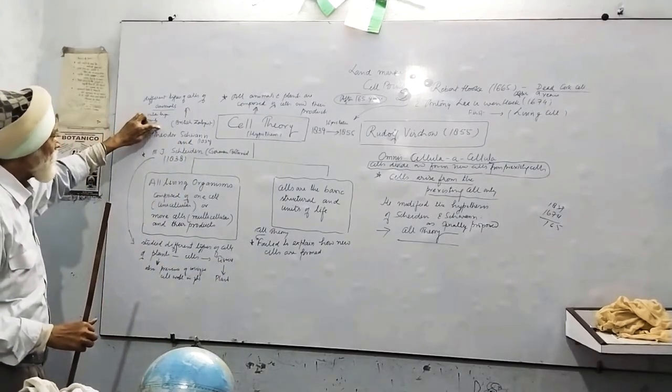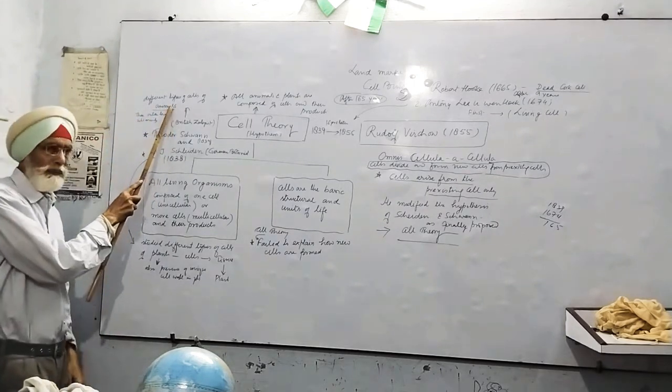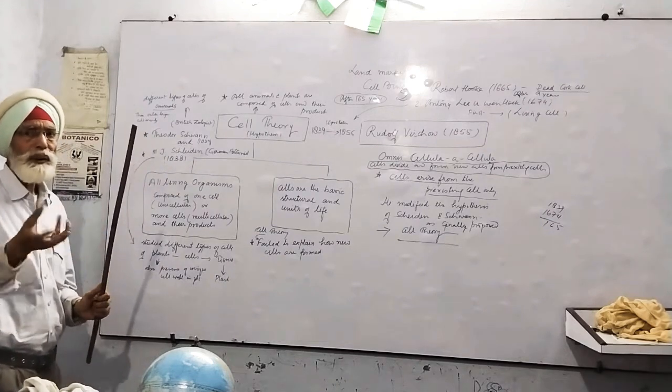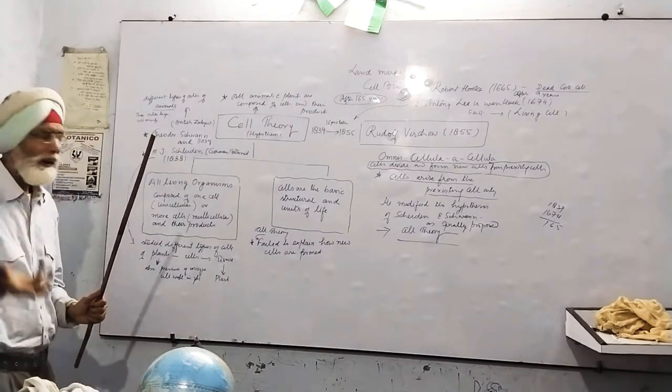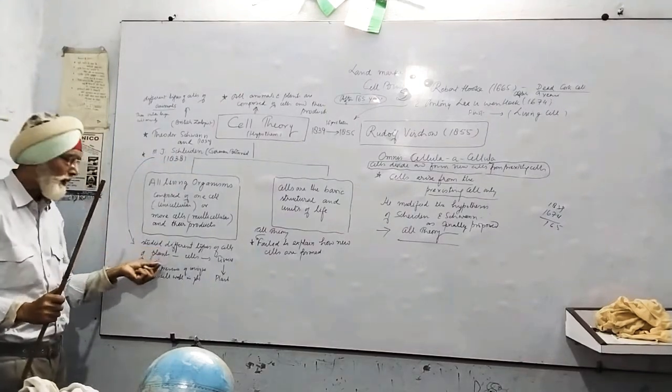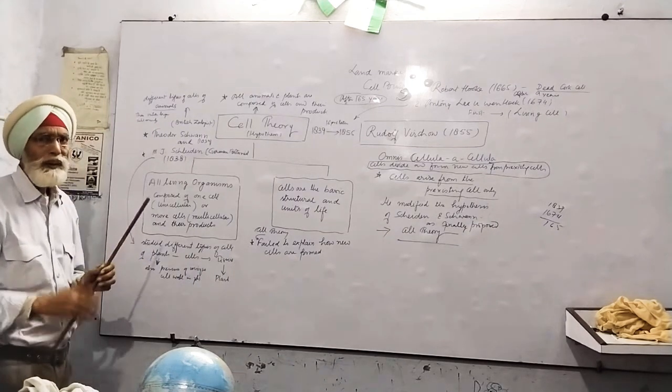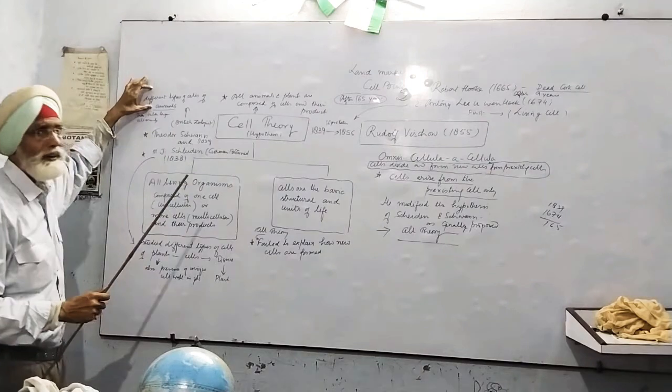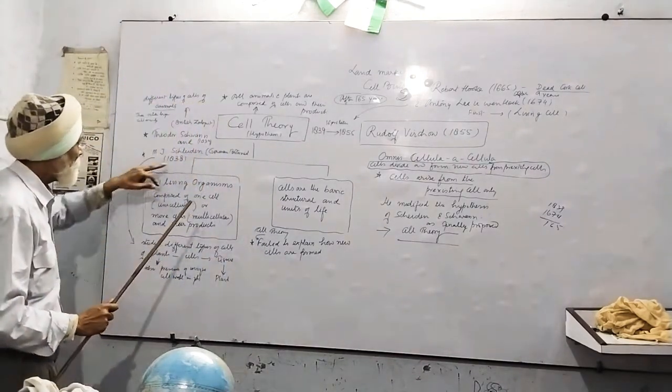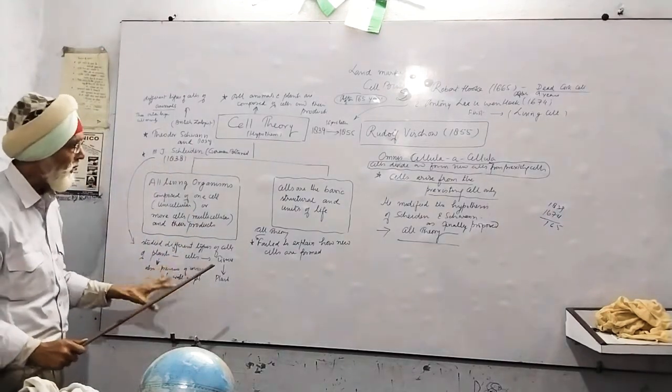British zoologist Theodore Schwann, who discovered, who studied different types of the cells in the animal, various types of the animal, and he studied the components of the body that they are made of the cell. And while M.J. Schleiden, he studied many types of different cells in the plant body. The difference between the two, that in all types of cells in the animal, there was no cell wall. But it was Schleiden, who discovered the cells also possessed cell wall.